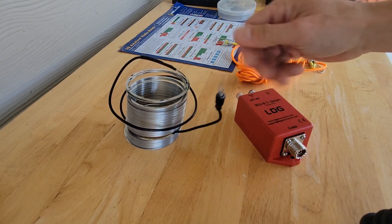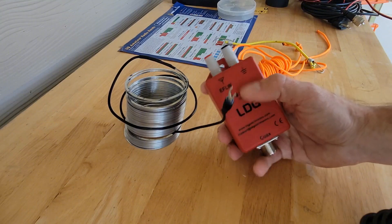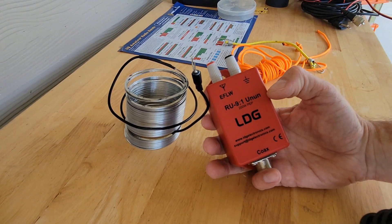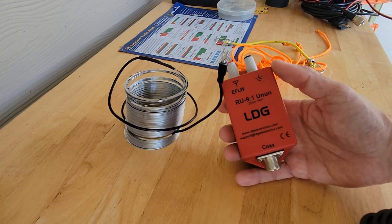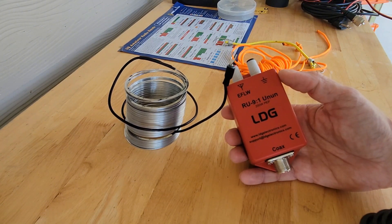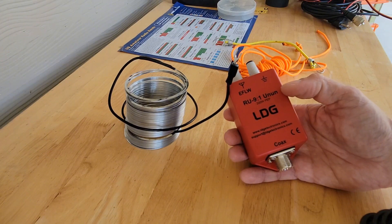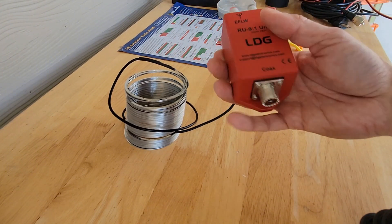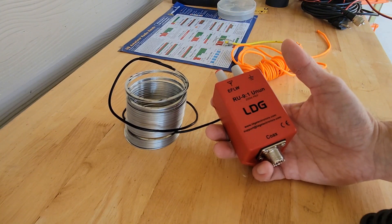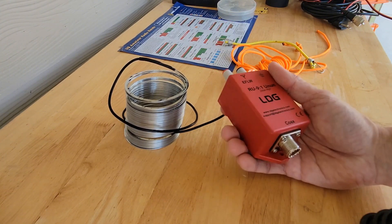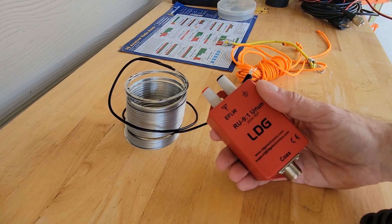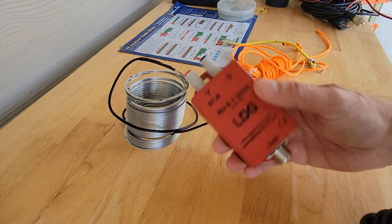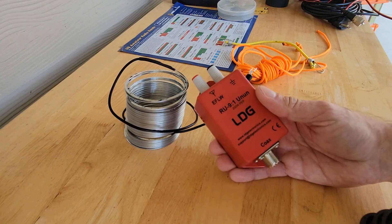You're going to need one of these. This is called an unun. This is by LDG. It is a 9 to 1. And what this does is this acts as a box that helps take out the different impedance levels between your antenna and what you'll eventually have to hook up to the coax, because radios like to have balanced systems and don't like to work with really funky numbers when it comes to ohm rating and impedance along different transmission lines.